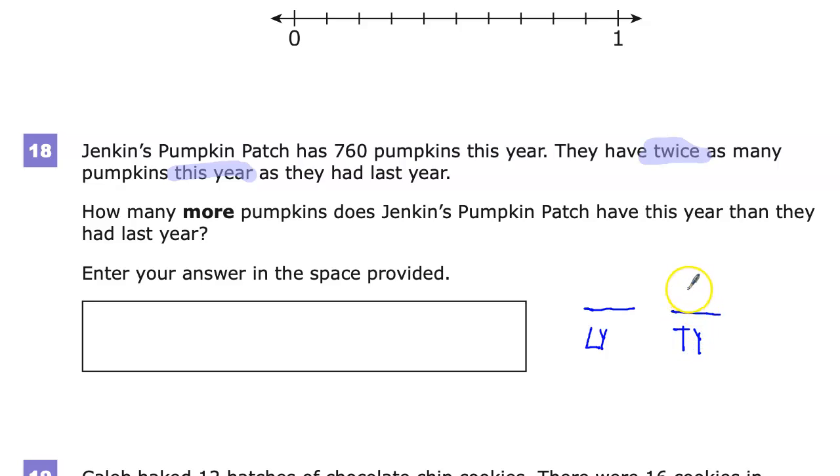This year, we have 760 pumpkins. We want to go back to the past and figure out how many pumpkins we had last year. That's part of our ultimate goal in all this.